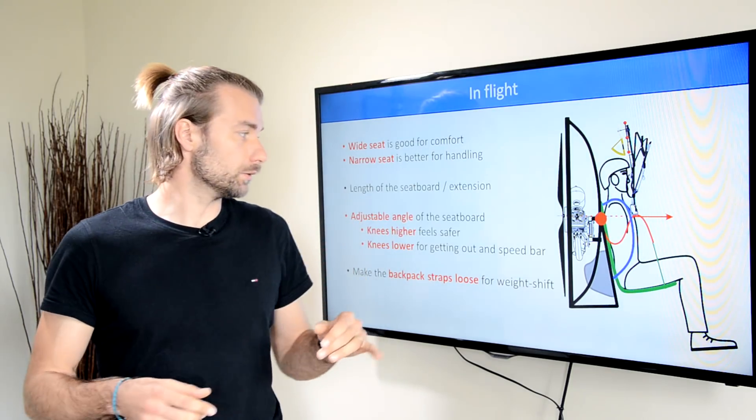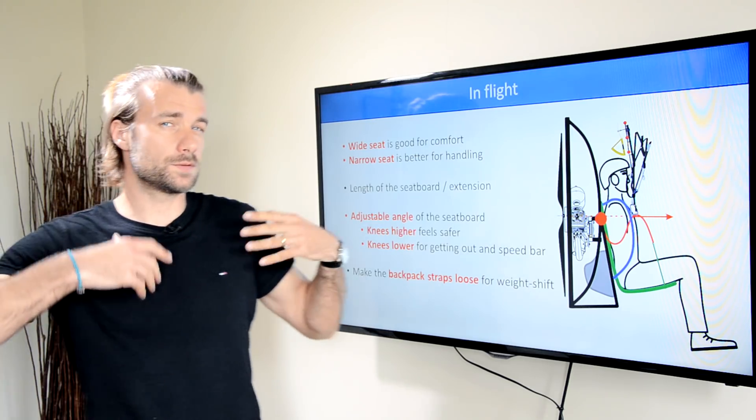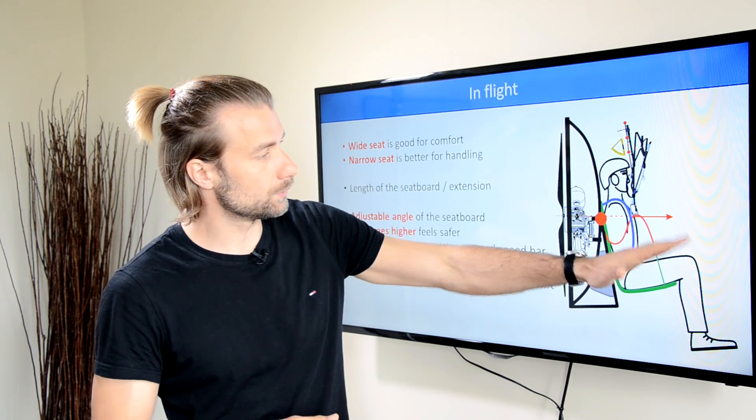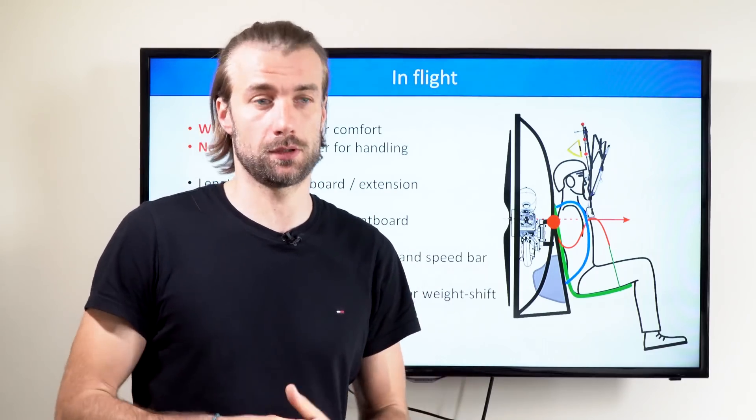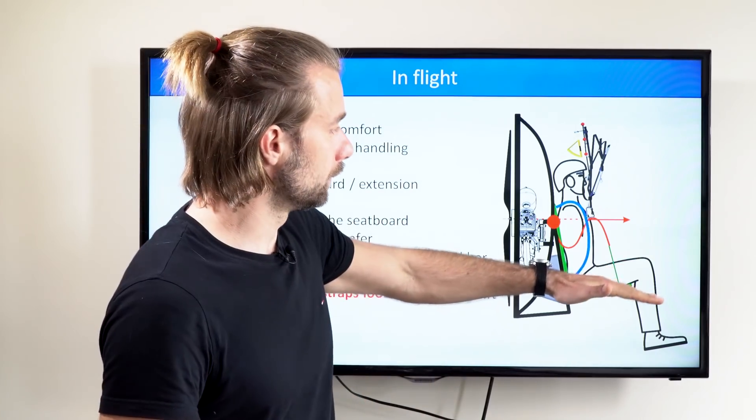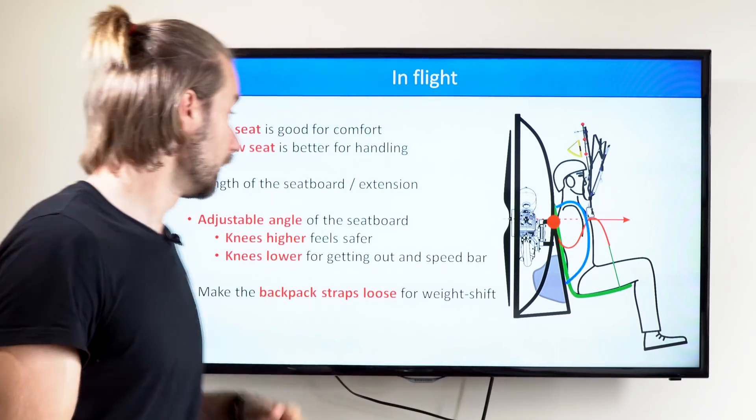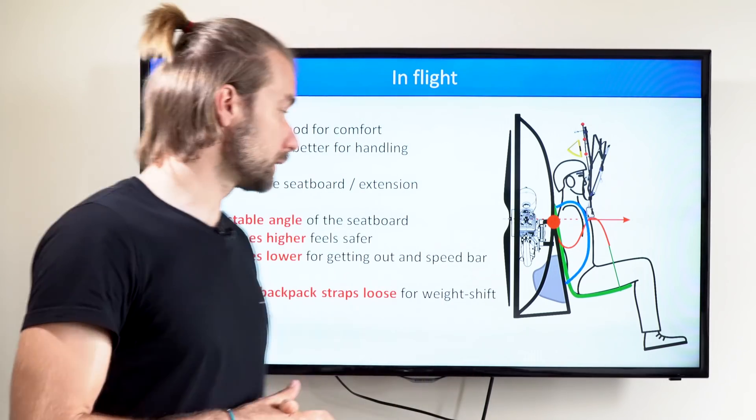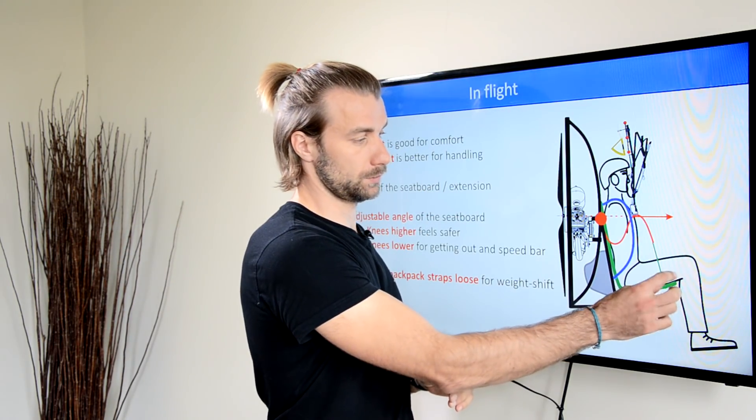Adjustable angle of the seatboard is really cool. It's pretty comfortable and gives you sort of a feeling of safety if your knees are higher in flight, that is your angle goes up. But for using the speed bar or getting out of the harness for foot drag or for landing, it's better to have the angle lower and have your knees a bit lower. Having that angle adjustable is really good, or at least if there is sort of an extension of the seatboard that is adjustable, so the last part of the seatboard may be adjusted. That's a good feature as well.